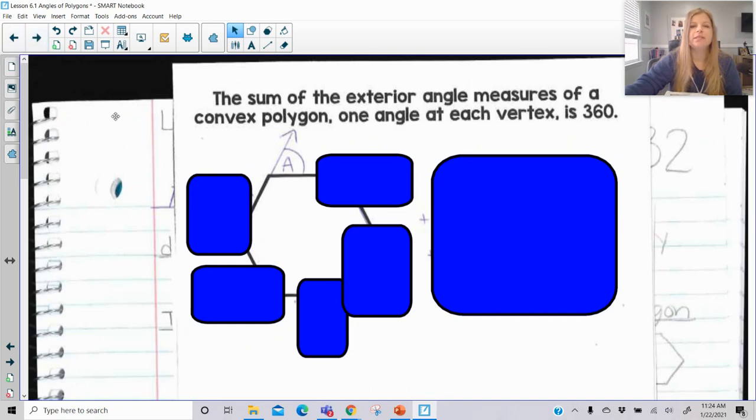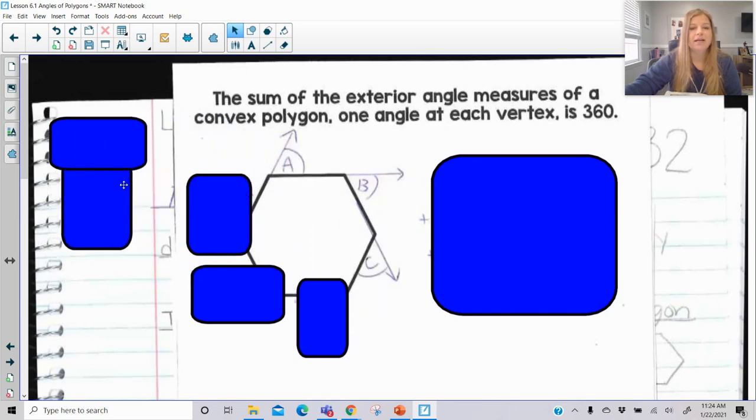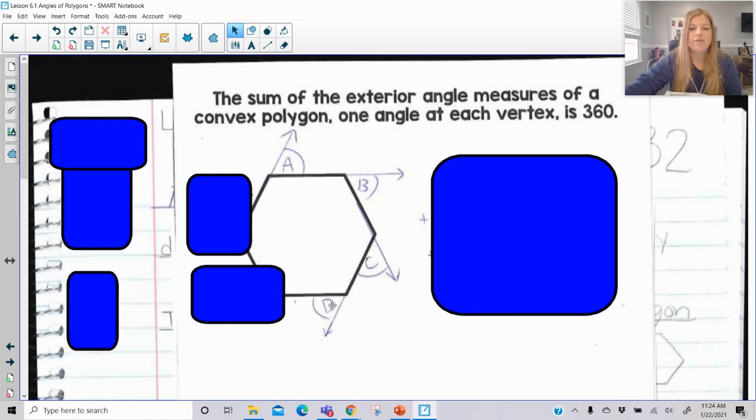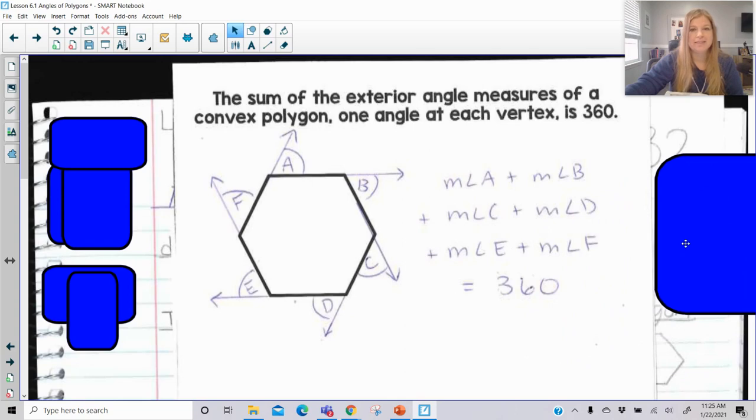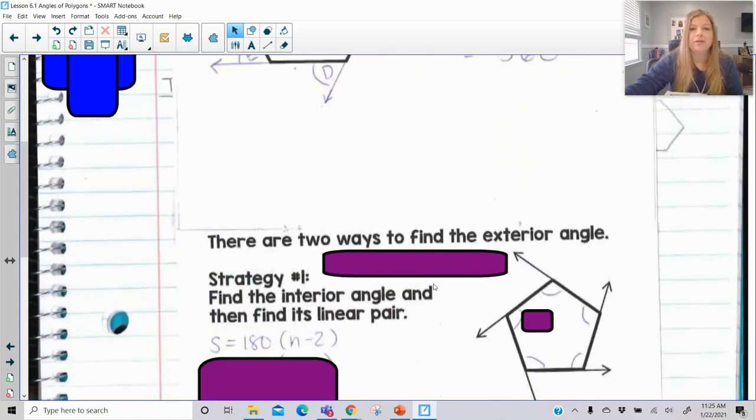Okay, so the last part of this is understanding the exterior angle sum theorem. It says the sum of the exterior angle measures of a convex polygon, one angle at each vertex, is 360 degrees. This is pretty cool. So what this is saying is if I was to take this hexagon and basically extend the sides of every side of this hexagon and extend it so I make these exterior angles, they're called exterior because they're on the outside of the polygon. All of these exterior angles, whether it's a hexagon, a pentagon, a quadrilateral, an octagon, a dodecagon, is always going to add up to 360 degrees. It is pretty cool. It's always going to be that way no matter what the figure is.